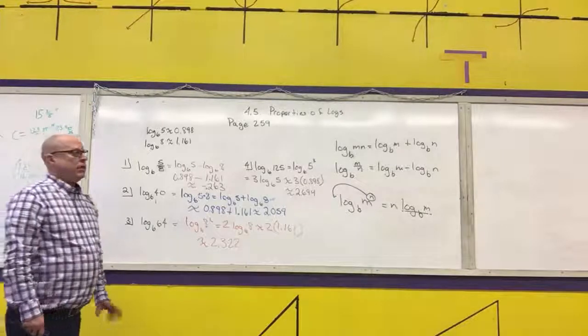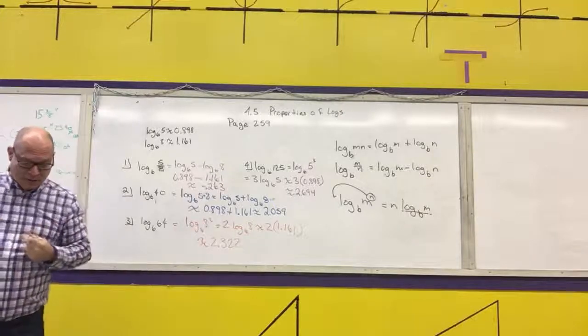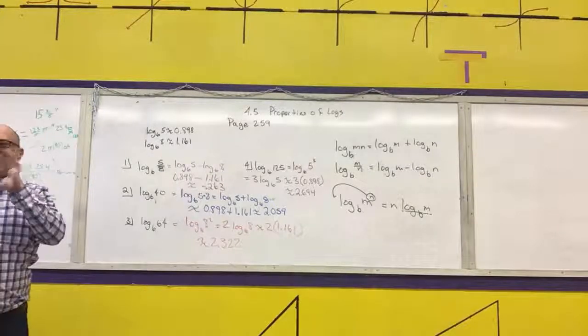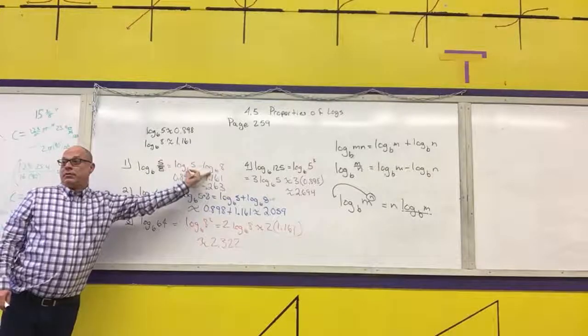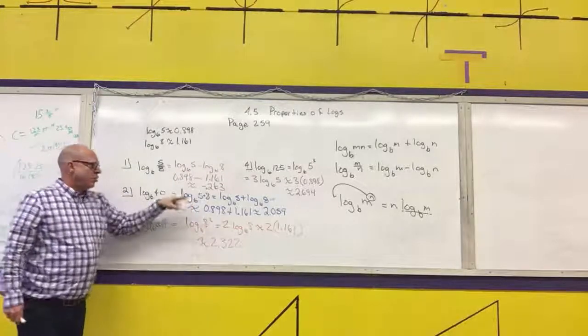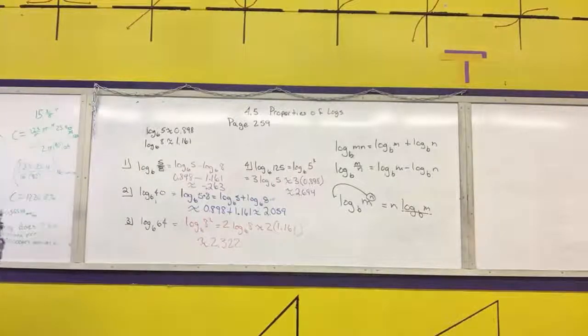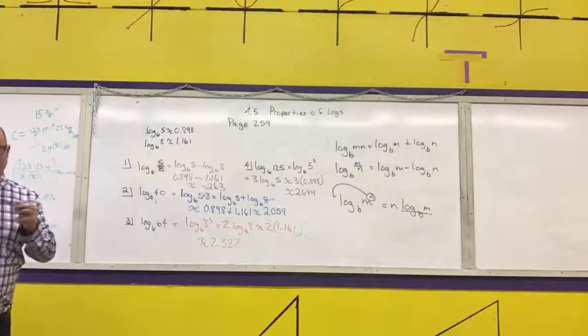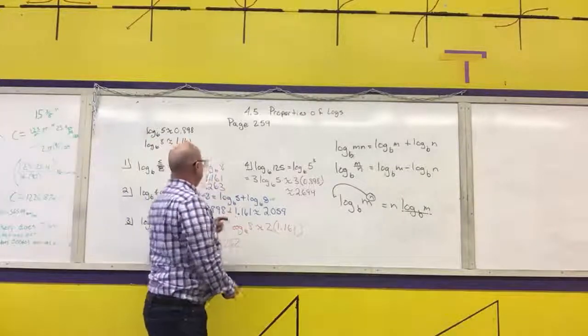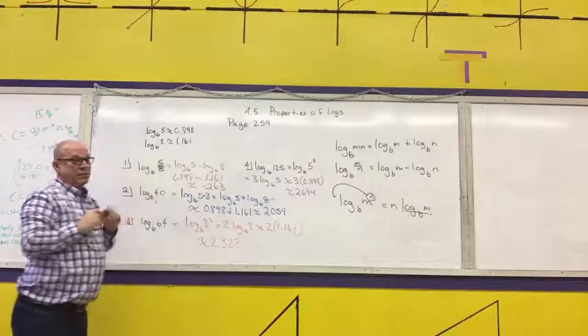This next one you can do two ways, but one you're going to have to write a sum of three things. The other way is just write a power rule. 5 to the what is 125? 5 to the third. So, this is equal to log base 6 of 5 cubed, which is equal to 3 log base 6 of 5, which is approximately 3 times 0.898. 2.694. You can go the opposite direction. If I was given this, you should be able to go backwards. We're going to do one of those in a minute.